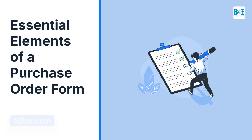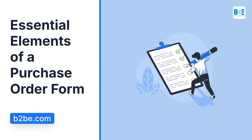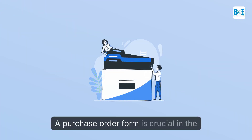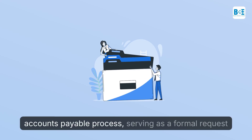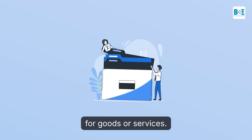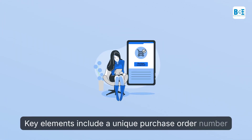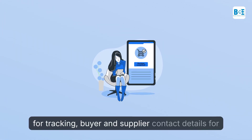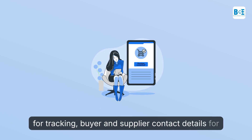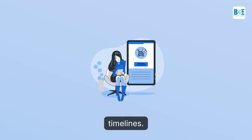Essential Elements of a Purchase Order Form. A purchase order form is crucial in the accounts payable process, serving as a formal request for goods or services. Key elements include a unique purchase order number for tracking, buyer and supplier contact details for clear communication, and the order date for managing timelines.